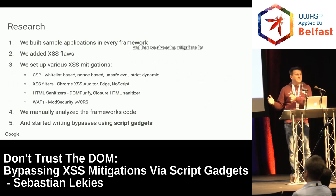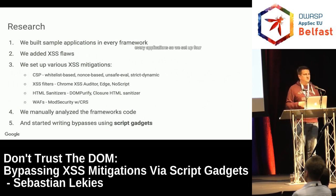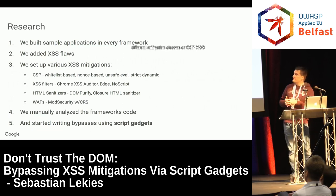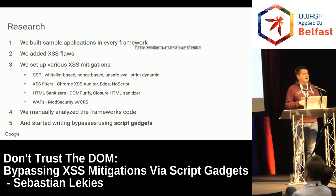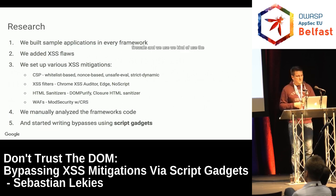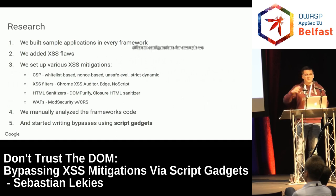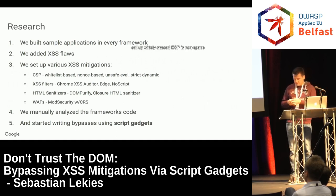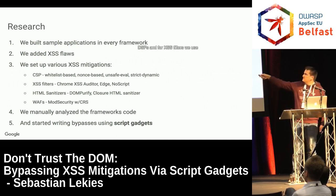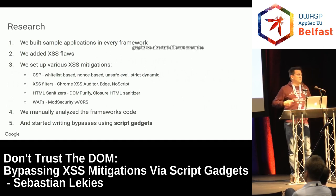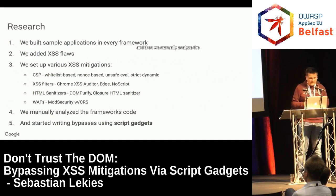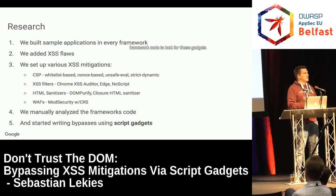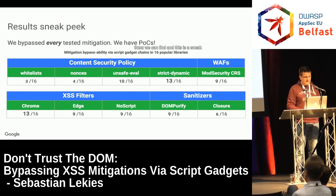We set up four different mitigation classes: CSP, XSS filters, sanitizers, and web application firewalls. We used default settings but different configurations — whitelist-based CSPs, nonce-based CSPs, and different XSS filters. We then manually analyzed the framework code to look for these gadgets and try to find how many we could find.